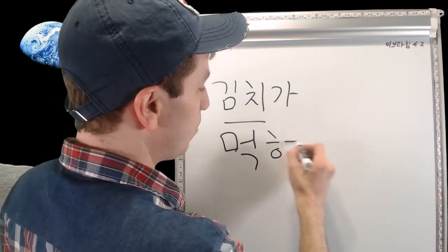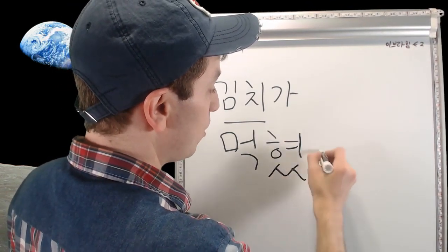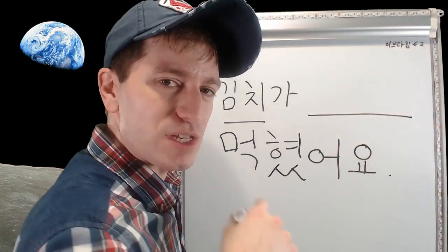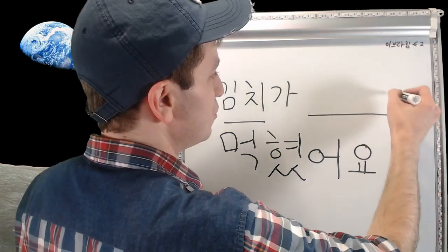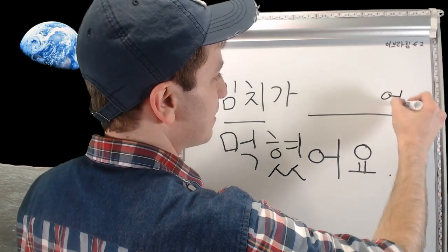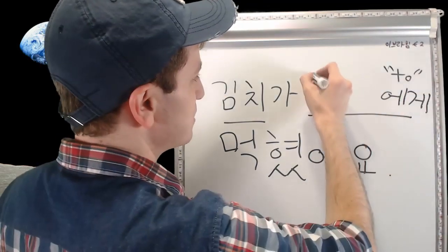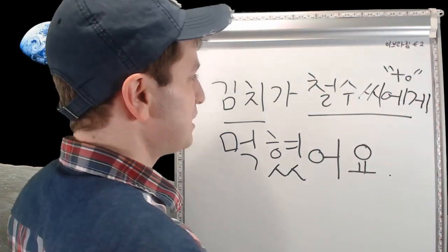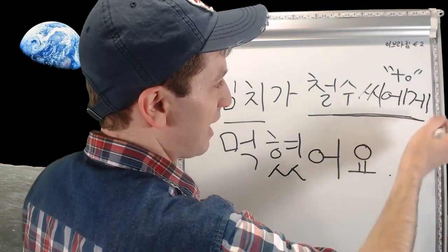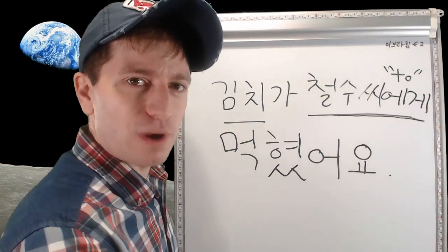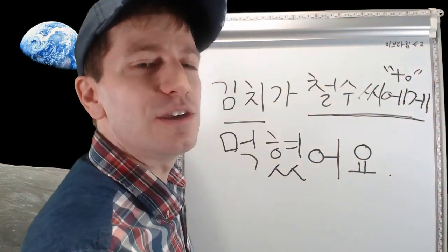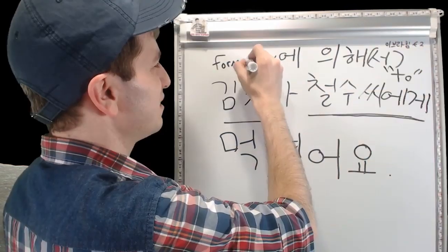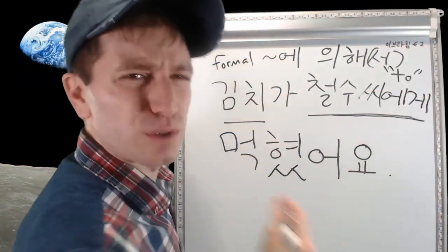So if you were to say 'the kimchi was eaten,' you'd say 김치가 먹혔어요. If you want to specify who does something, you use 에게 — literally 'to.' You could say 철수에게 먹혔어요 — the kimchi was eaten by 철수. There is also another way to say 'by': 에 의해서, which is optional and more formal sounding.